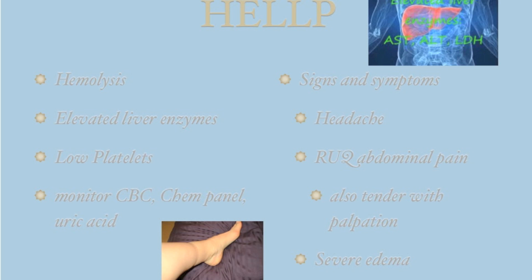A serious, life-threatening complication of PIH is HELLP syndrome. In addition to abnormal blood pressure and proteinuria, the classic signs and symptoms include a severe headache, abdominal pain in the right upper quadrant or epigastric area — due to liver inflammation — and severe edema.